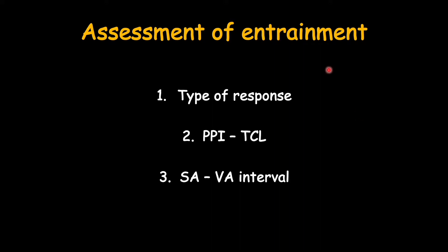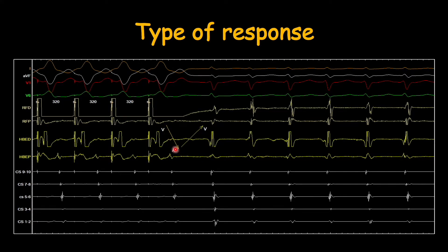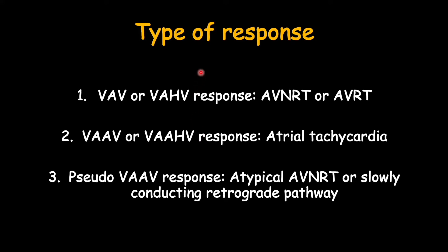To assess the entrainment we look at three things: first, the type of response when we stop pacing; second, the difference between post-pacing interval and tachycardia cycle length; and third, the stimulus-to-A minus VA interval. To assess the type of response, once we stop pacing we look at the various waves. Once we stop pacing there is a V wave followed by an A wave and then appearance of another V wave — so this response is called a VAV response. This VAV response is also called a VAHV response when we are able to see a small H just before the V wave.